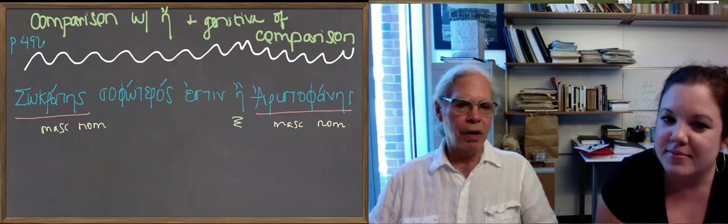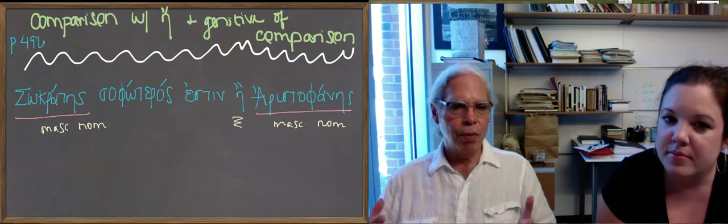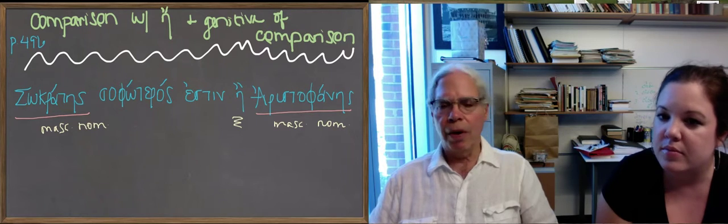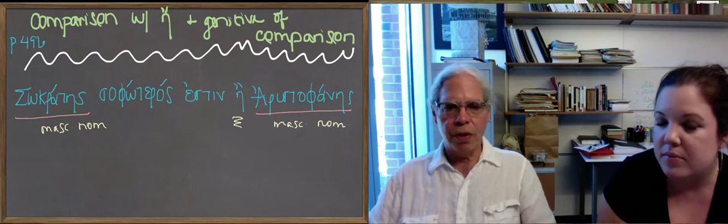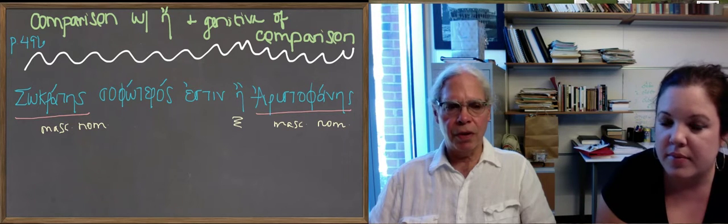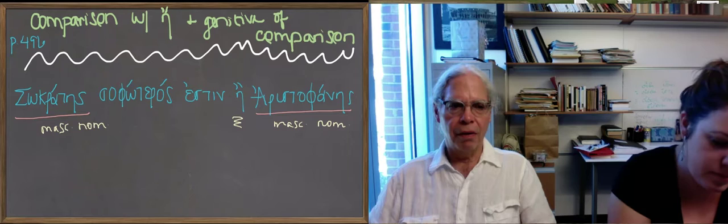But Greek has another thing that you can do as an alternative, and there's no rule about which is better or worse. Some authors in some situations prefer one or the other. And the rule is this: you can, even in the sentence given above, leave out the word than, e.